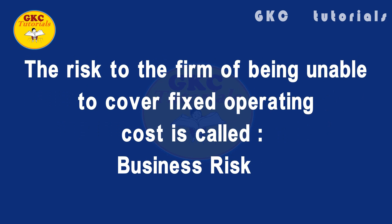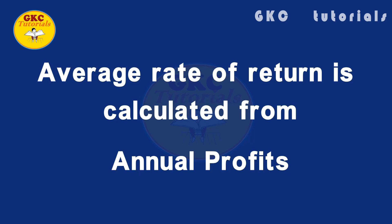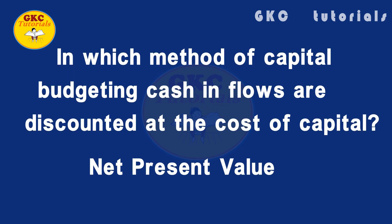Next question: the risk to the firm of being unable to cover fixed operating cost is called business risk. Next question: average rate of return is calculated from annual profits. Next question: in which method of capital budgeting are cash inflows discounted at the cost of capital? The answer is net present value.